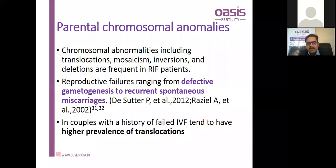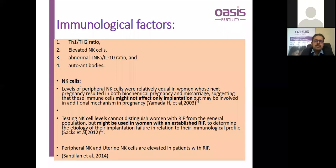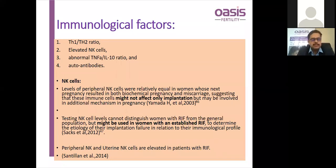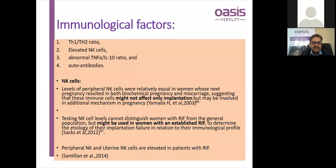Balanced translocations lead to defective gametogenesis or recurrent spontaneous miscarriages and RPL cases. Other factors in women — anatomical, pelvic, and infections — are mostly self-explanatory. The other important consideration is immunological factors and the probable role of therapy for treatment. We have TH1 to TH2 ratio, elevated natural killer cells, abnormal TNF-alpha to interleukin-10 ratio, and autoantibodies which are responsible for RIF.